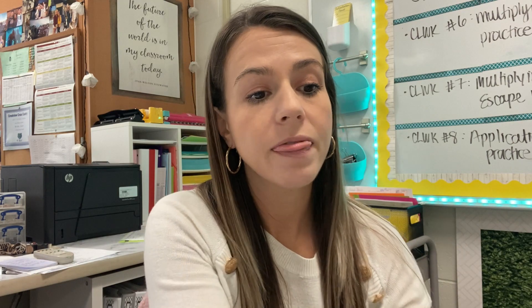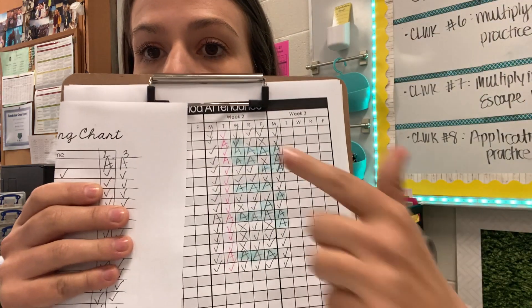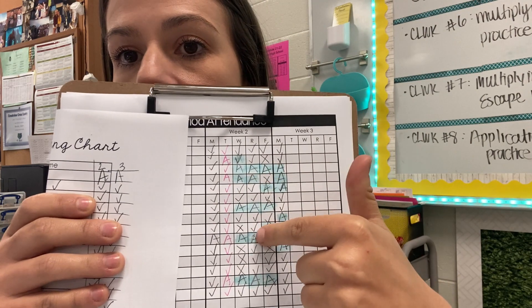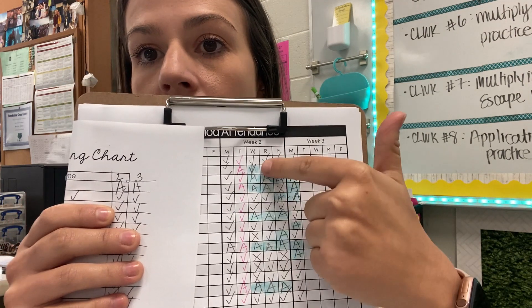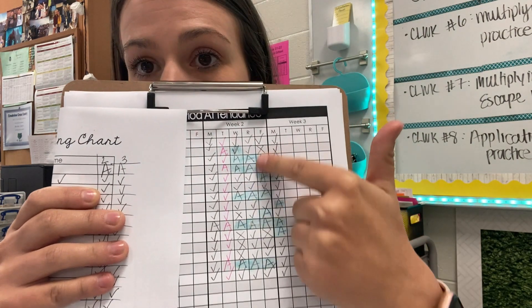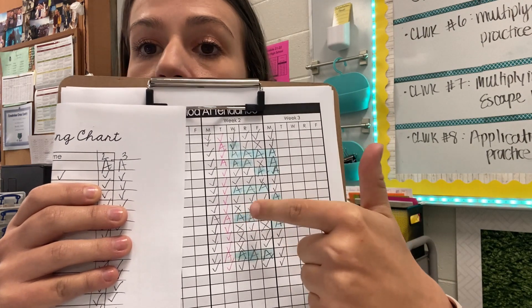When we start class we always have an opening, and to take attendance I walk around the room with a clipboard and check off whether they've done it or not — checks if they did it, X's if they didn't do their video notes, and I mark kids absent as well. You need some sort of system to check notes, because if kids aren't doing the notes it will all fall apart. You've got to be very diligent about checking video notes every day.